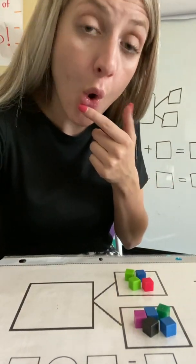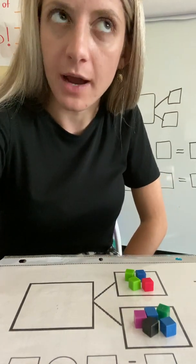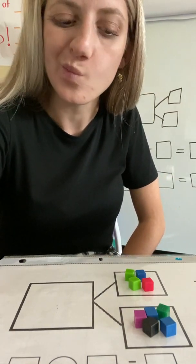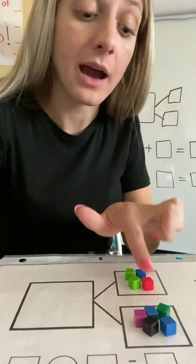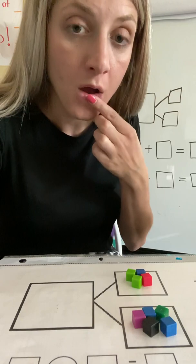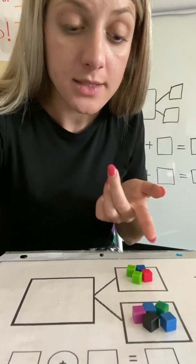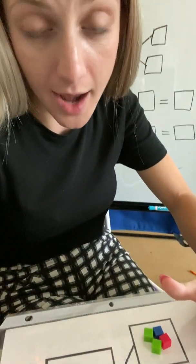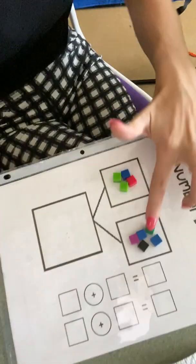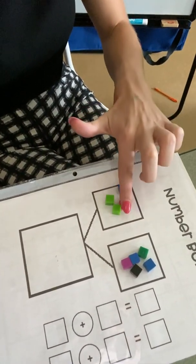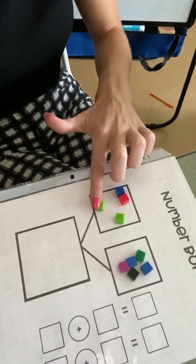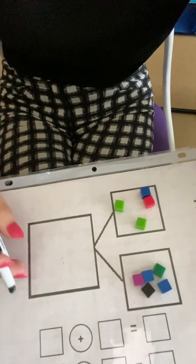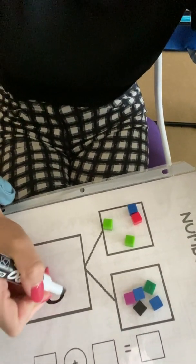So now I have to find my whole number. What can I do to find my whole number? I could sit here and count all the cubes. I could say, oh, I already know that this is a group of five. So I'm going to start with this five and I'm going to count on to count the rest of the cubes. Let's try that. Five, six, seven, eight, nine. So my total is going to be nine.